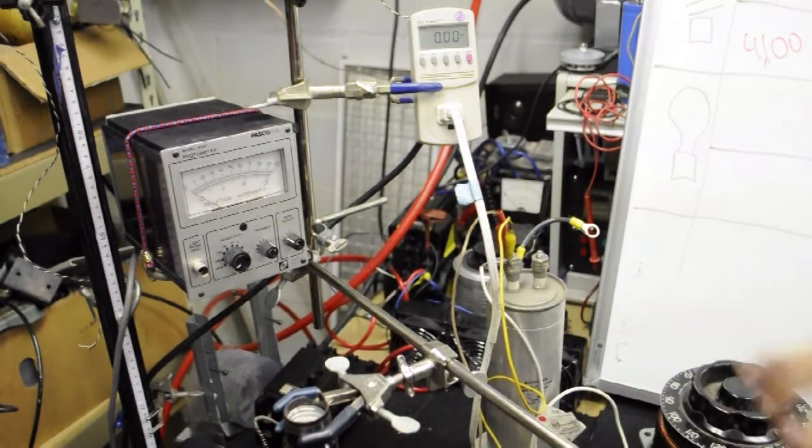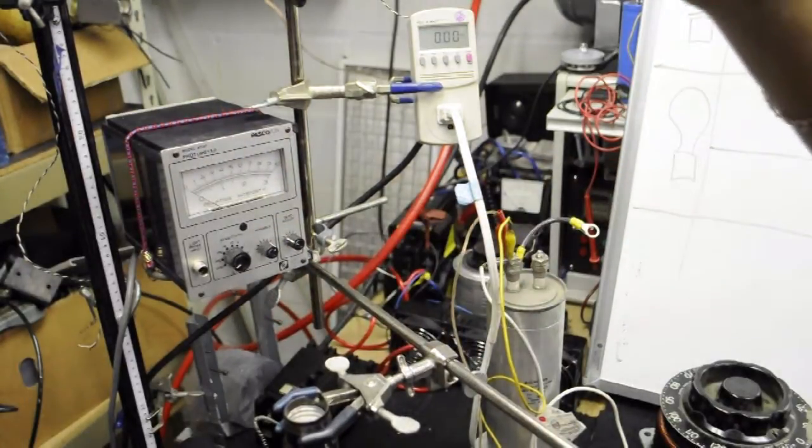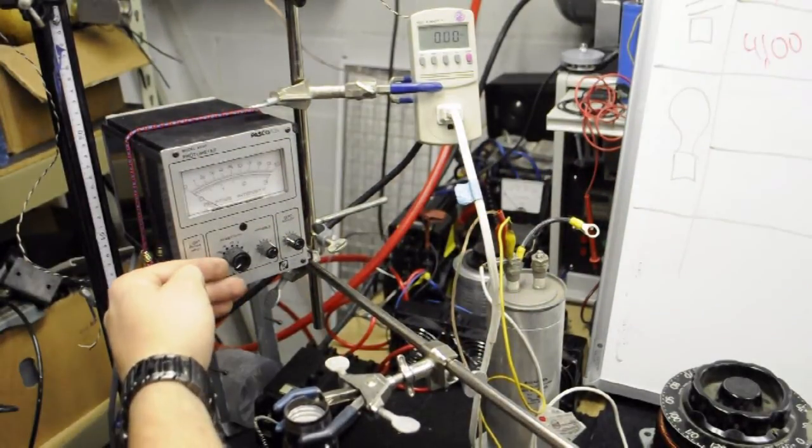And also in case anybody is wondering, I have the photometer calibrated to zero with the ambient light that's in the room here. So you can see if I block it, it goes negative.